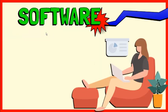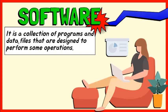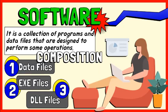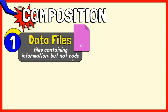At this point, let's focus on software. Software is defined as a collection of programs and data files that are designed to perform some operations. Aside from the programs, the software may also have a collection of data files. They are files containing information, but not code. They are only meant to be read or viewed, and not executed.